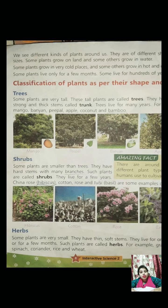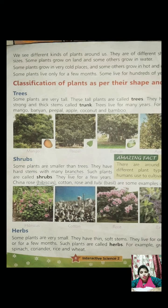So the topics learned today are trees and shrubs. Trees are tall, big plants with a thick trunk as their stem. Shrubs are plants which are a little smaller than trees, live for a few years, and have many branches. Examples of trees are mango, banyan, peepal, apple, and coconut. Examples of shrubs are rose, tulsi, cotton, etc.